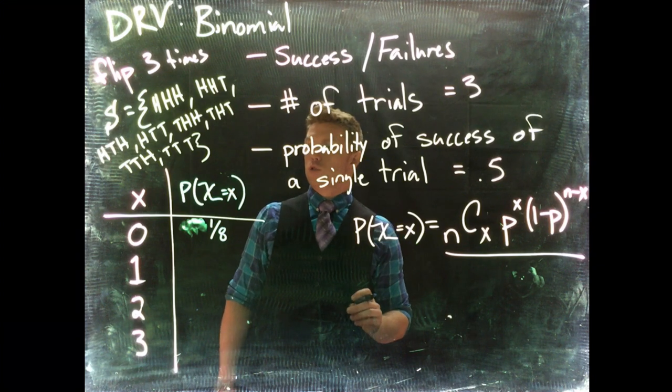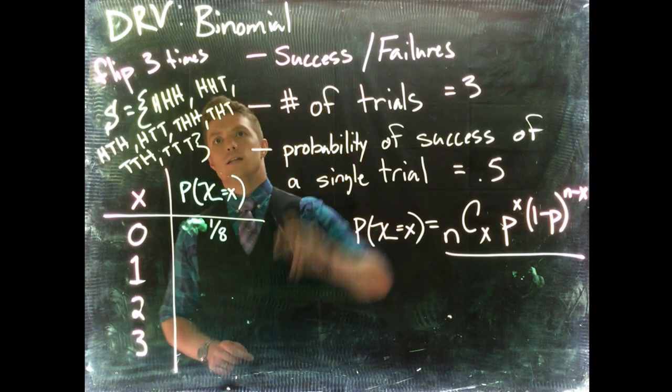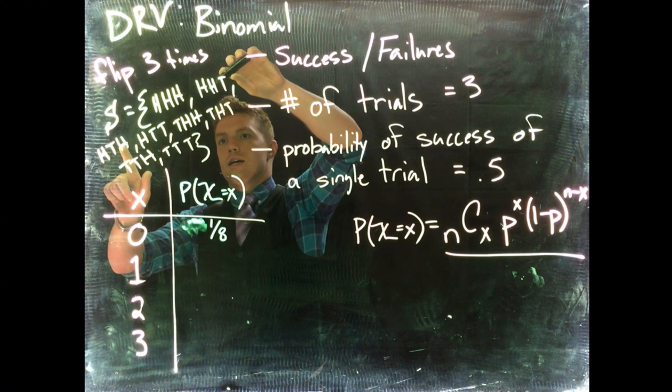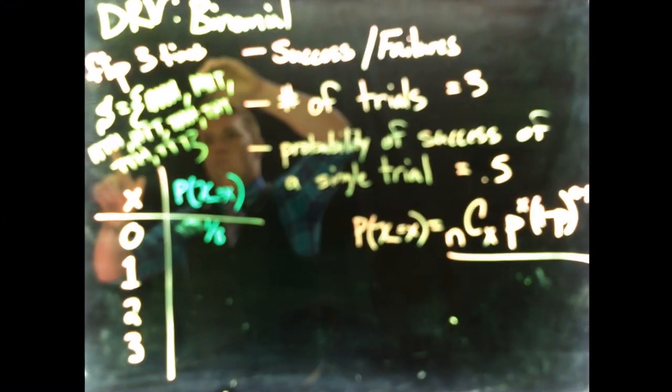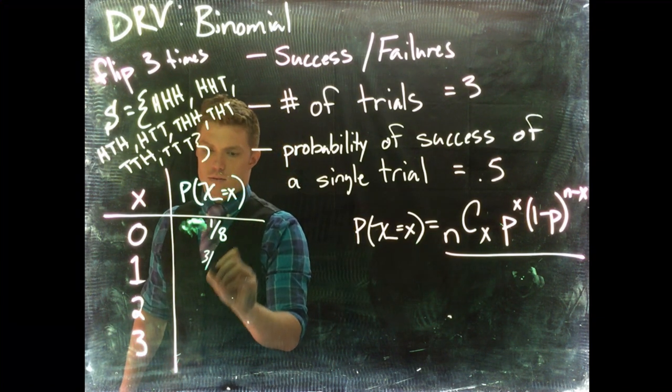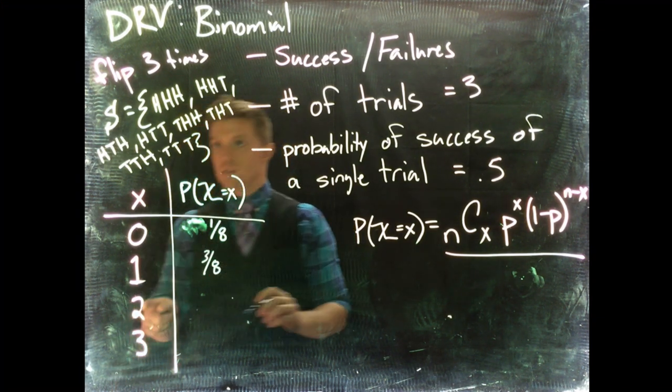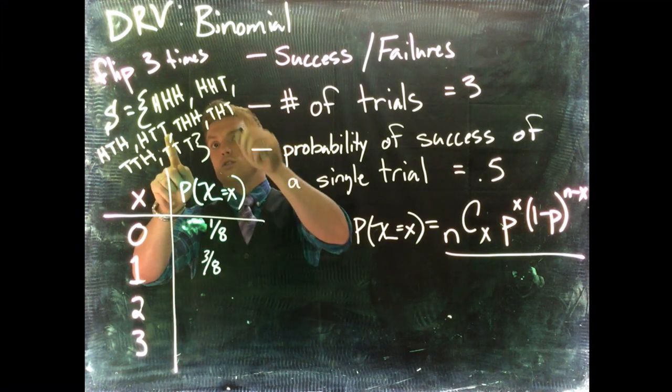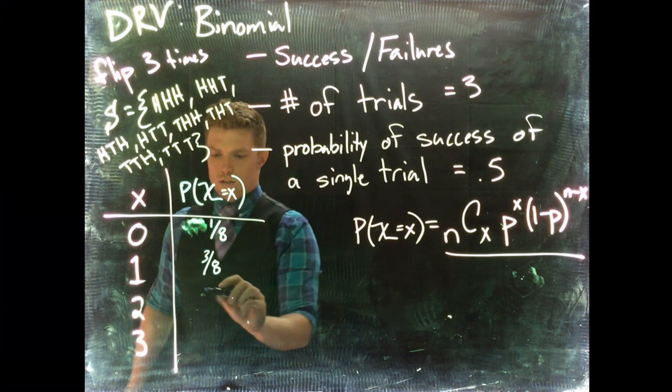How many times do we see one tail? Well, there would be one tail here, one tail here, and we've got one tail here. So we've got three out of eight. How many times do we see two tails? All right, so one, two tails here, two tails here, two tails here. There's three eighths.